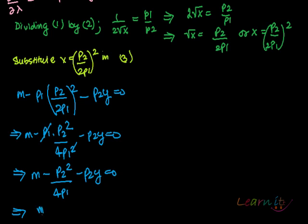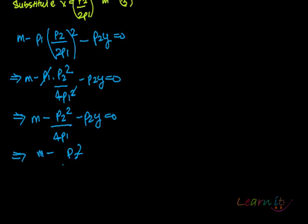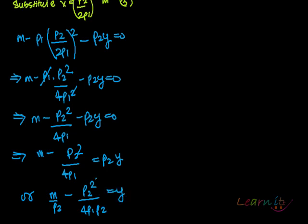So it is m minus P2 squared by 4P1 equals P2y, or m by P2 minus P2 squared upon 4P1P2 equals y. This P2 P2 will get cancelled out, and this will give you y equals m by P2 minus P2 by 4P1.